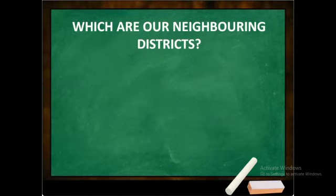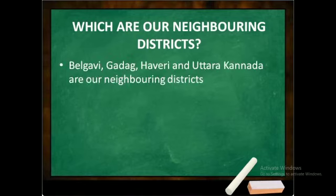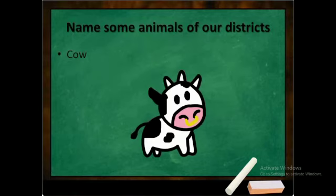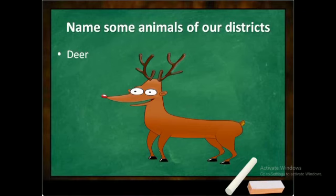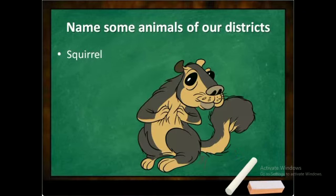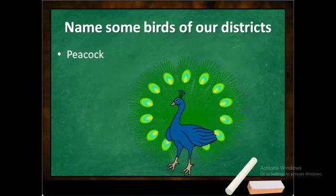The neighboring districts of Dharwad — the districts next to Dharwad — are Belgaevi, Gadag, Haveri, and Uttar Karnataka. Every district has got different types of animals, fruits, birds, etc. In the same way, our district is famous for cow, horse, goat, deer, snake, and squirrel.